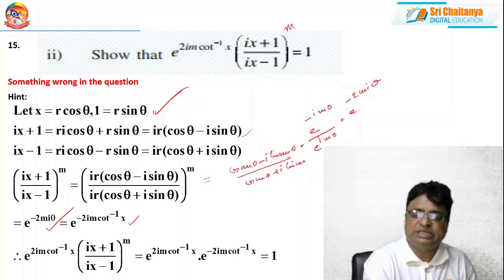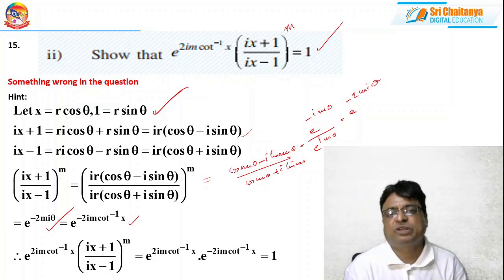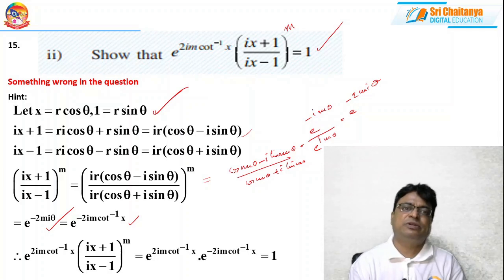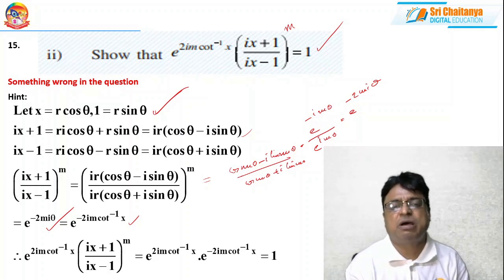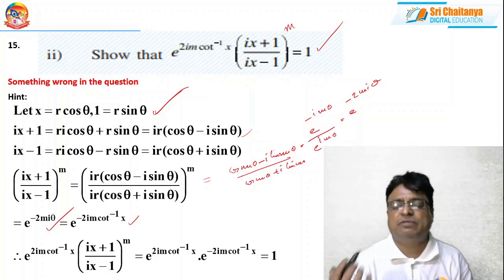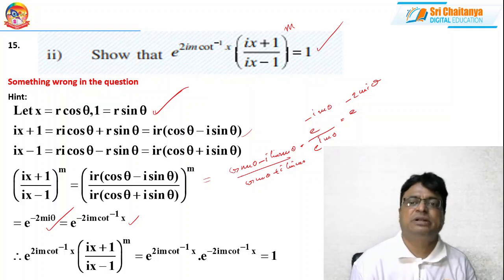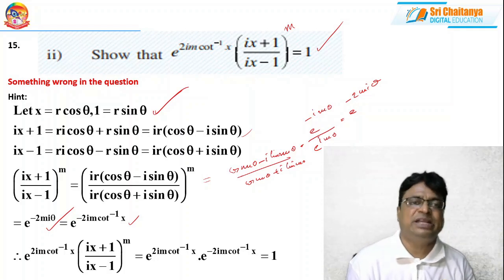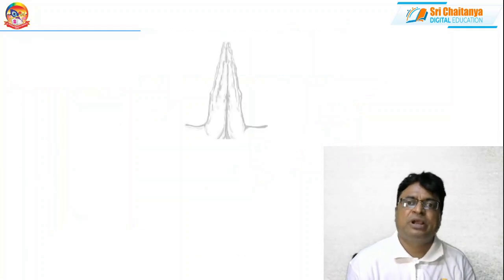Please change the statement accordingly and we will get the answer quickly. The key point is: instead of taking z = x + iy, I conveniently took X = R cos θ and 1 = R sin θ, constructing iX + 1 as a complex number. This kept things in control and I simplified the expression easily to get the answer.